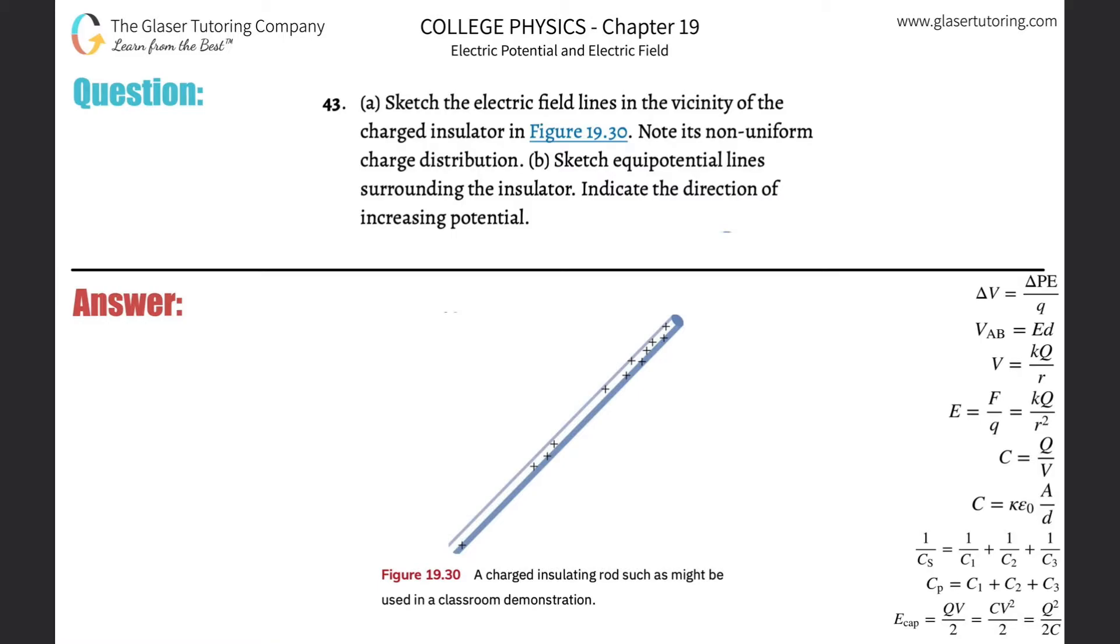Number 43 letter A: sketch the electric field lines in the vicinity of the charged insulator. Notice non-uniform charge distribution. A lot of charge here, a little charge here, even less here. So with a lot of charge, we're going to have lines that are coming out from it.